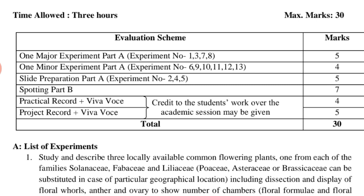Spotting is 7 marks. Your practical record — that means the record you have maintained throughout the whole year — plus its viva, and your project record along with its viva voice, carries 5 marks together, totalling 9 marks for those components. Credit marks depend on the teacher based on your performance through the academic session. The overall total for practicals is 30 marks.